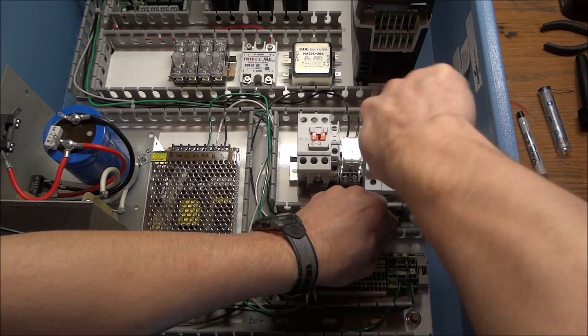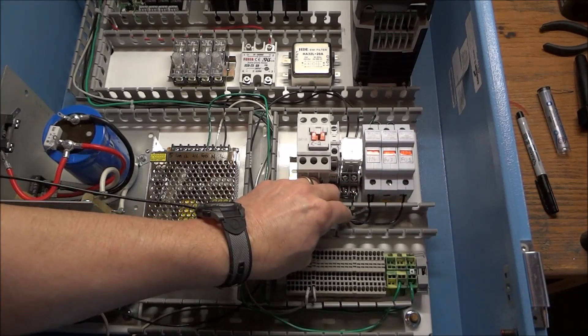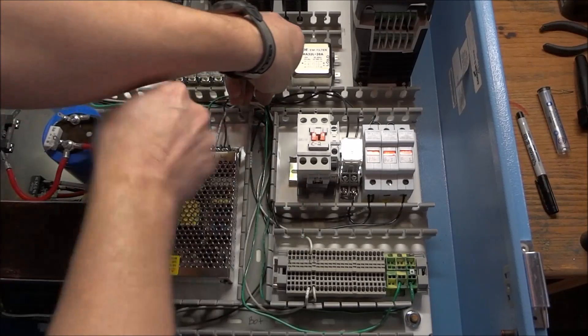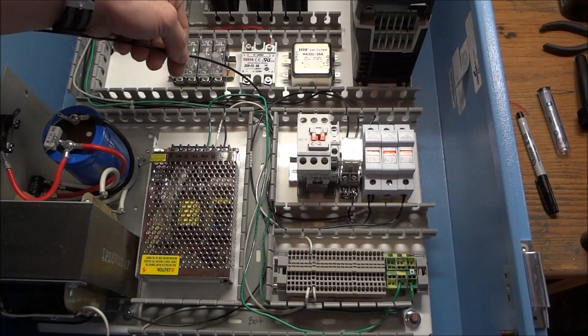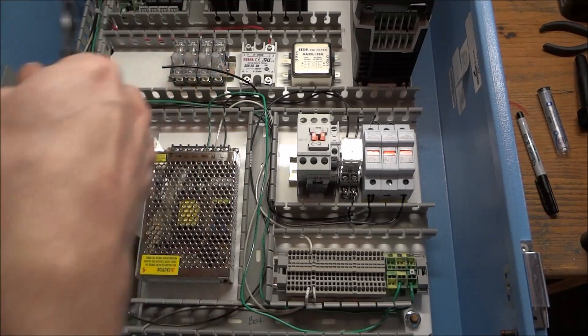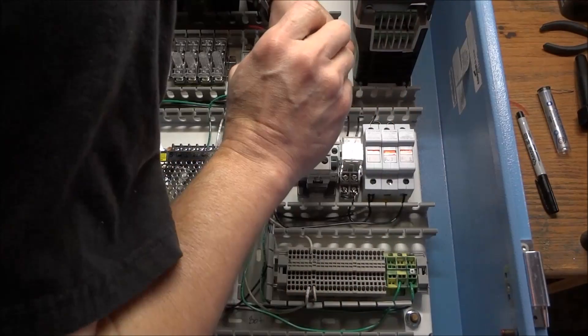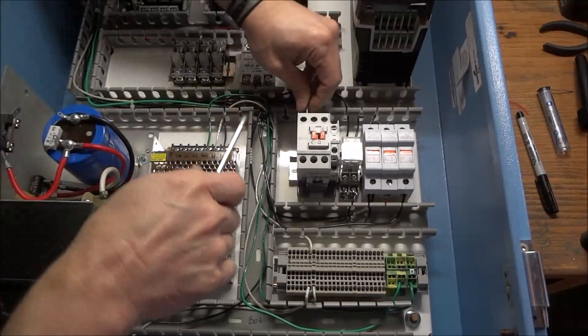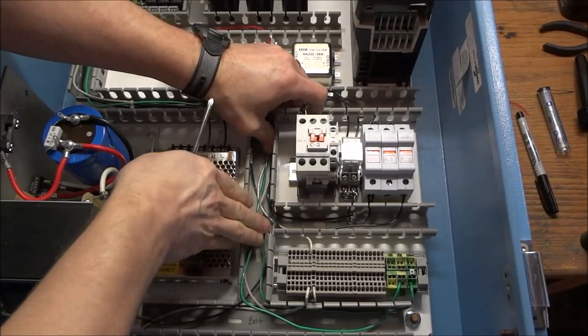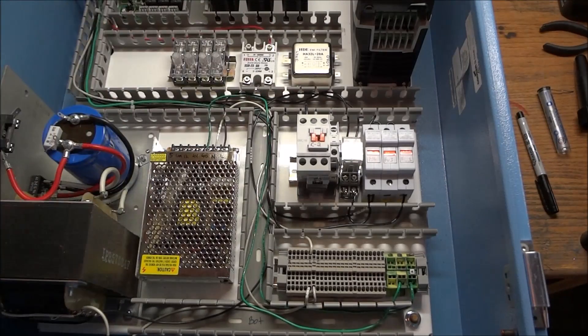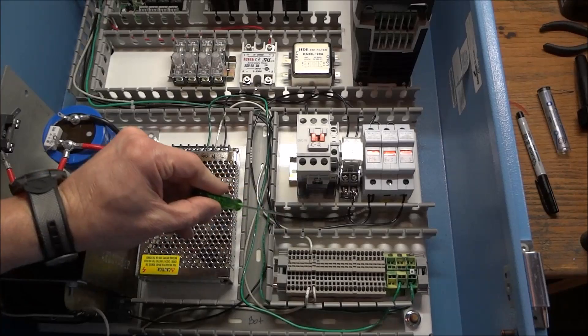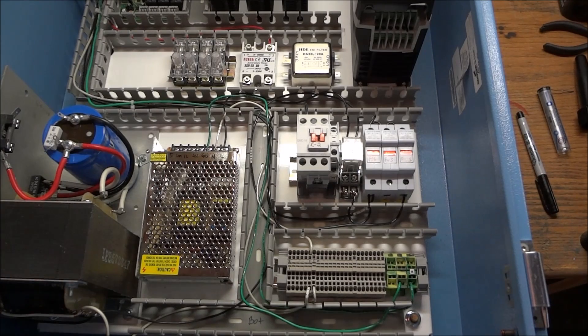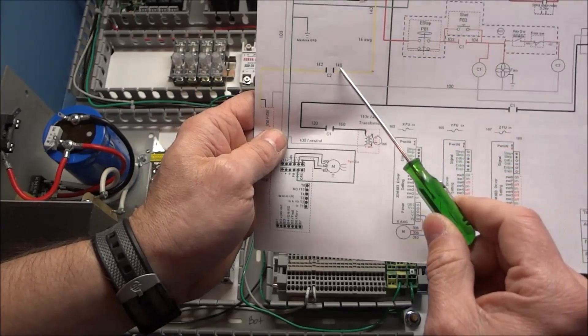Coming out of fuse 1, we want to go to L1 on our contactor. Coming out of fuse 1 and going over to our contactor C2 on terminal L1, right here.